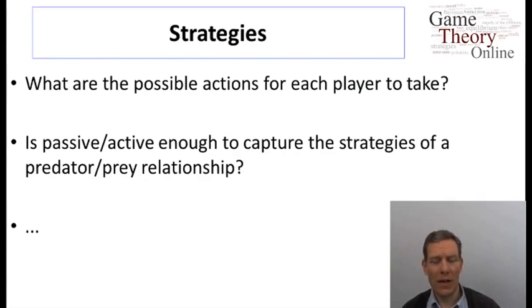And then we have to decide what are their strategies. So what are the possible actions that each player can take? Is passive and active enough of a distinction in order to really capture the details of what's going on in a predator-prey relationship? Well, probably not in full detail, but at least in terms of getting a broad cut at things it might be. So how we choose to model the strategies and the actions that are available to different players will make a difference in the type of analysis and the richness of the analysis that we end up with.